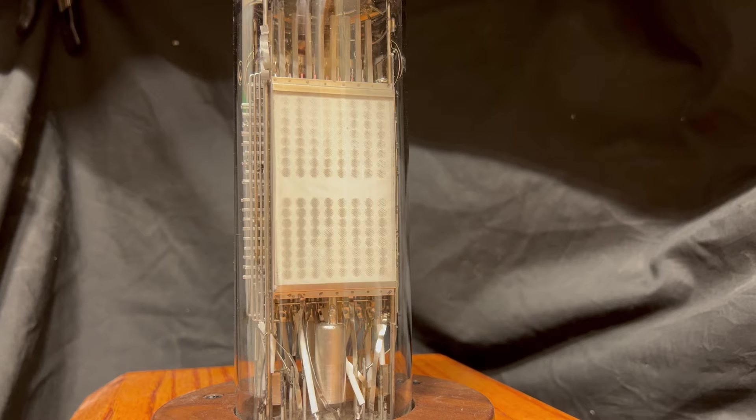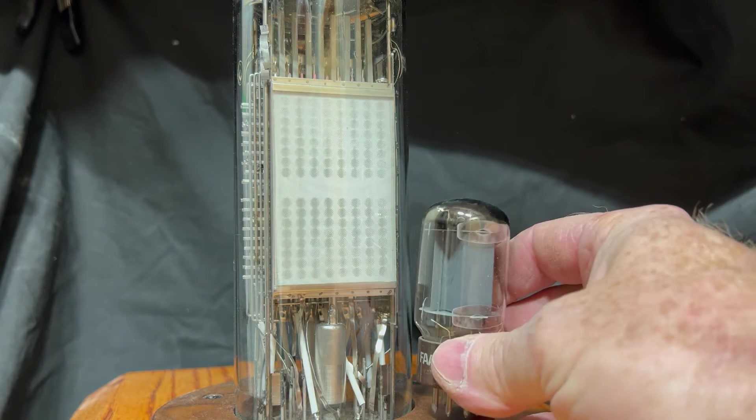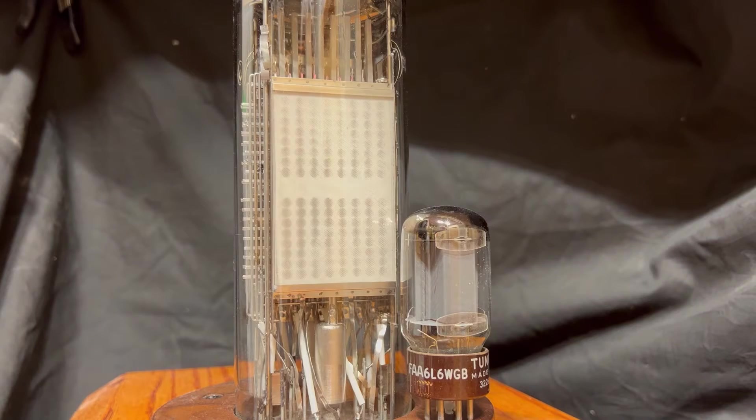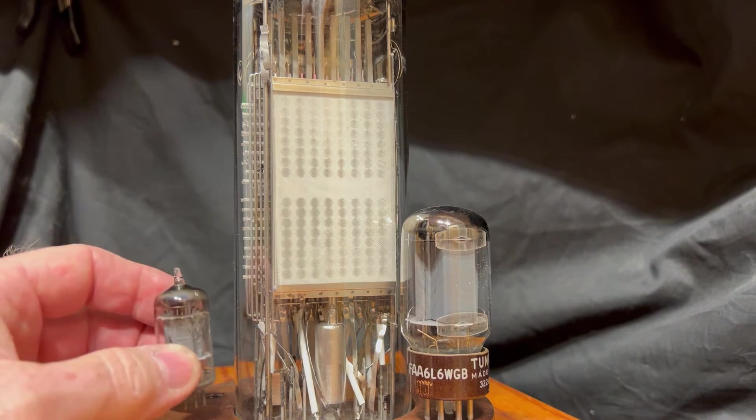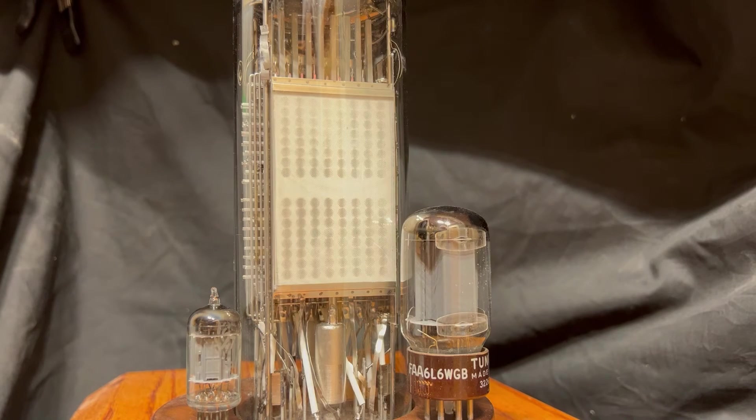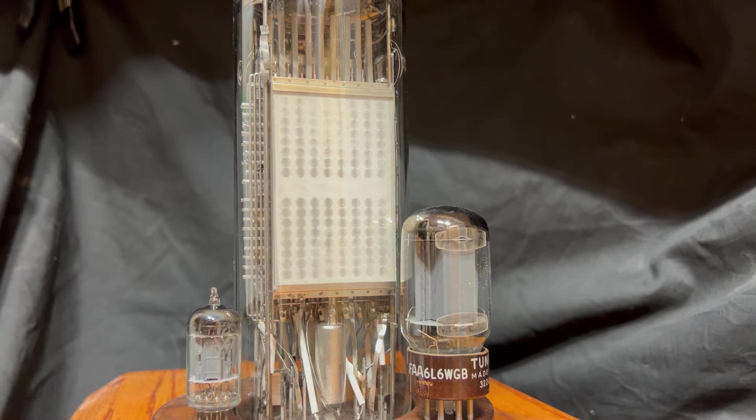I'm going to put a couple of other common tubes in the shot here just to give you an idea how large this thing is. This is a 606, this guy is a 12ax7, and you can see how impressively large this thing is. Just staring at it, you can see this is quite complicated inside.